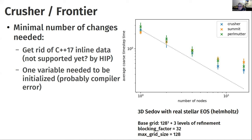Castro was tested on Crusher (Frontier) with only two required changes: the compilers didn't support C++17 inline data, so that had to be reverted; and one variable deep in the reaction code needed to be initialized (likely a compiler bug). With just those two changes, the code worked on Crusher without any other modifications.